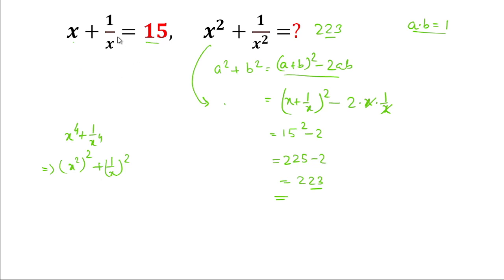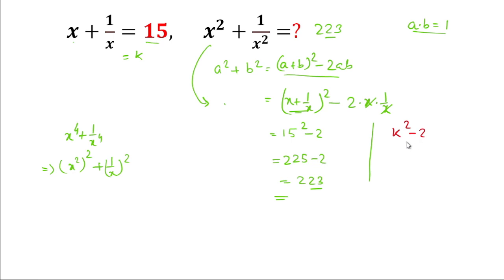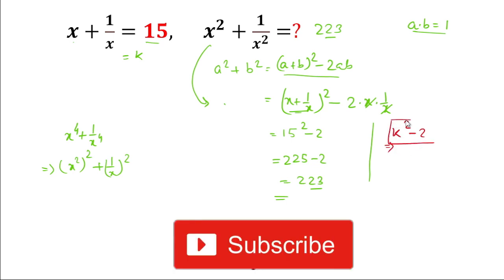We can write x to the power 4 plus 1 by x to the power 4 as x square whole squared plus 1 by x square whole squared. Now in place of x square plus 1 by x square, let us take it as k. We can write this as k square minus 2. So this is the formula to solve this type of problem.